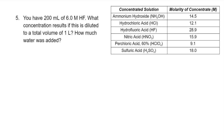Number five says we have 200 milliliters of 6.0 molar HF. What concentration results if this is diluted to a total volume of one liter? This is a slightly different setup. We have 200 milliliters of 6 molar HF — this is our V1 value, our initial volume, and our M1 value, our initial concentration.